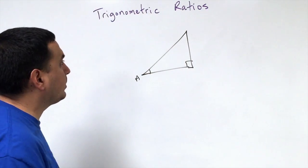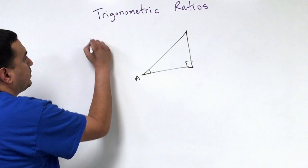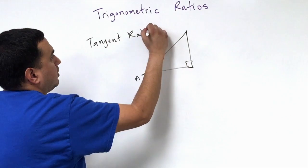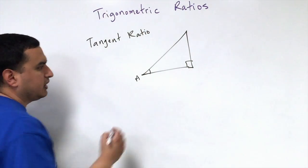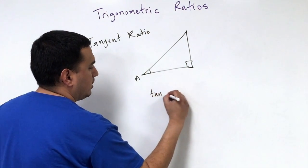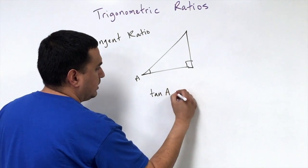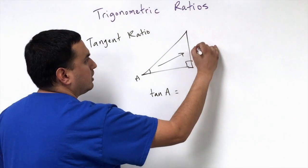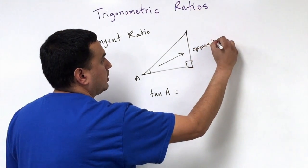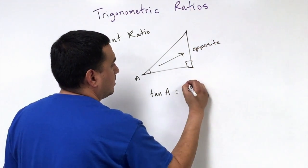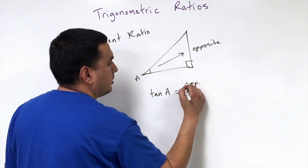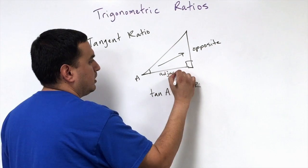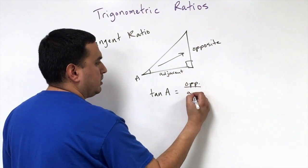The first thing we're going to look at is called the tangent ratio, or just tangent for short. The way we abbreviate this is: the tangent of angle A is equal to the opposite leg over the adjacent leg. So it's opposite over adjacent.